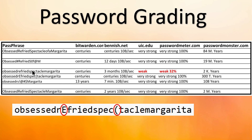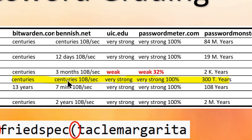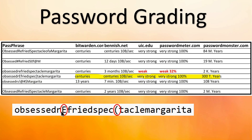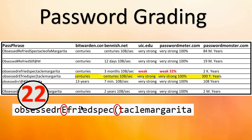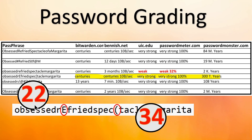We put the tweaked passphrase up and now we're at centuries, centuries at 10 billion per second, very strong, very strong, 300 trillion years — that's phenomenal. We took the standard passphrase, it was pretty good already, and we made two minor tweaks. If you want to help remember how you tweaked it, I thought of using a number like 22-34: position two, character two on the second word is the capitalization, and position three, character four on the third word is where we put in the special character. So the number 22-34 you can write down somewhere — no one's going to understand what that is — and it could help you remember which characters you actually changed.